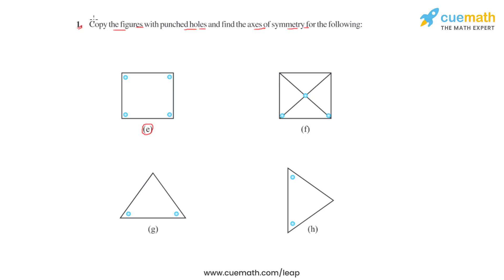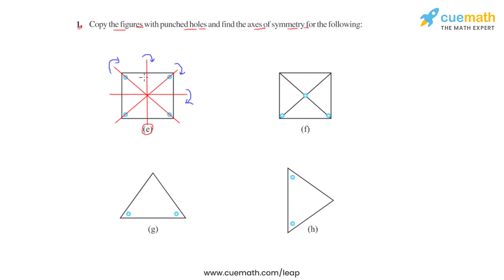To summarize the axes of symmetry for figure E: there are four lines which divide the figure into two equal halves and serve as axes of symmetry when the figure is folded along them. So for figure E, we can say that it has more than one axis of symmetry, and these four lines are the axes of symmetry.